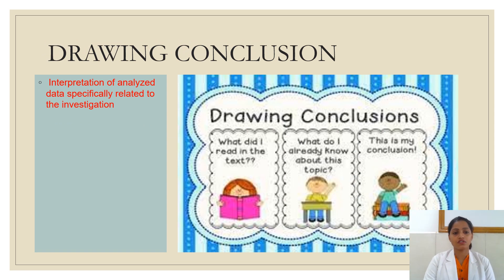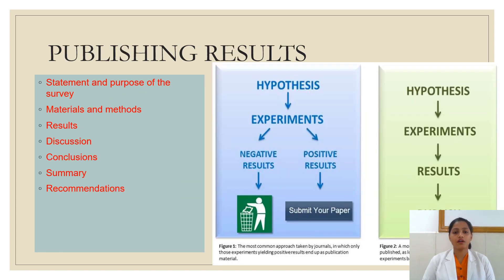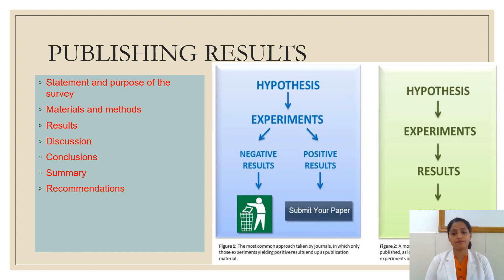Finally, drawing conclusions. A perfect interpretation of the data should be done based on the analysis, and it should be properly written so that readers and viewers can understand it equally. After describing the results, it is very important to publish them so that they reach the public domain. The publication should include the statement and purpose of the survey, materials and methods, results, discussion, conclusion, summary, and recommendations.